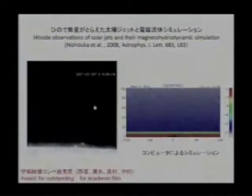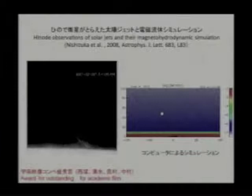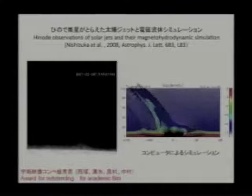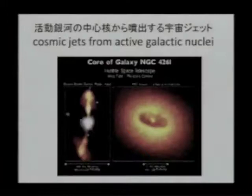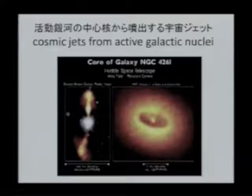And this is another computer simulation — an outstanding award was given to this particular work. This is a jet phenomenon of the sun taken from the Hinode satellite. In this case, magnetohydrodynamic simulation was employed. The computer simulation was able to reproduce exactly the jet phenomenon captured by the observation satellite, and it really astonished me.